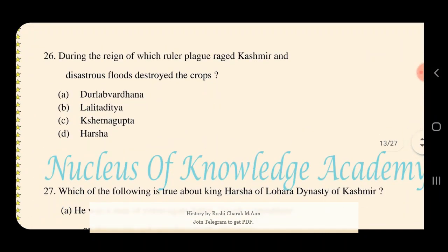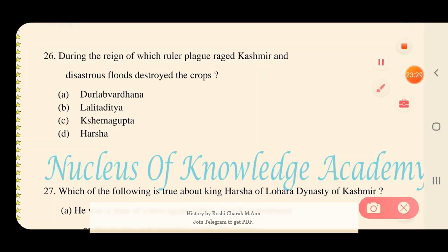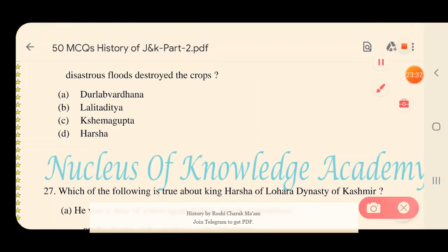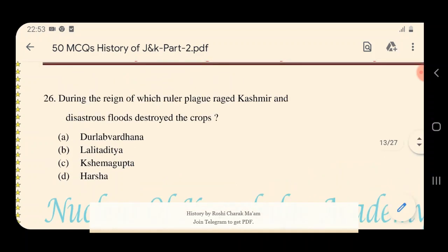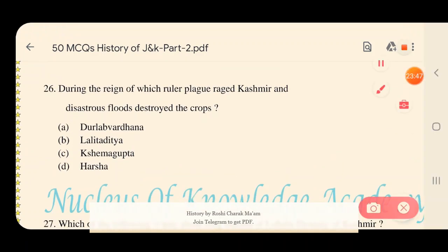Question 26: During the reign of which ruler did plague rage in Kashmir and disastrous floods destroy the crops? Options: A) Durlabhavardhana, B) Lalitaditya, C) Kshemagupta, D) Harsha. The answer is D — Harsha. During Harsha's reign, plague struck Kashmir and floods destroyed all the crops.